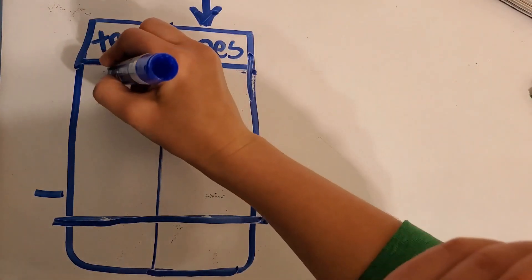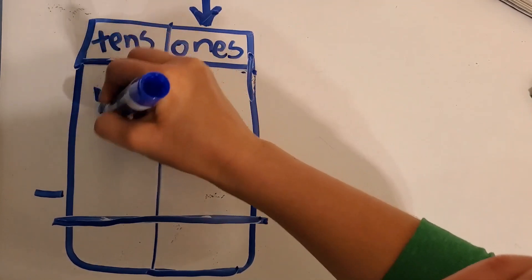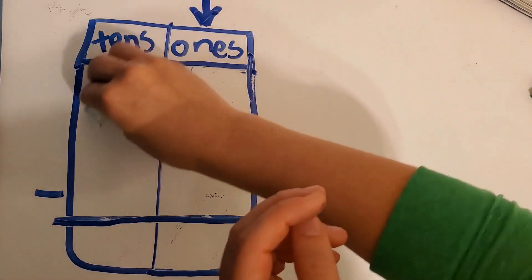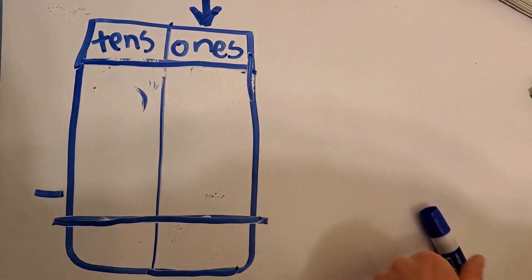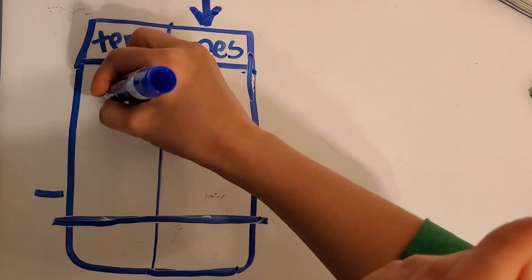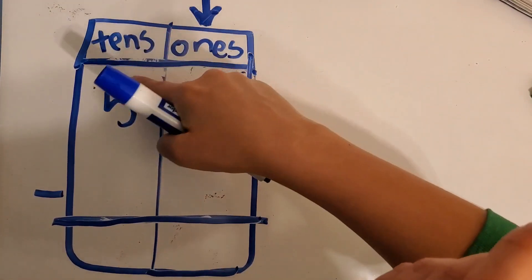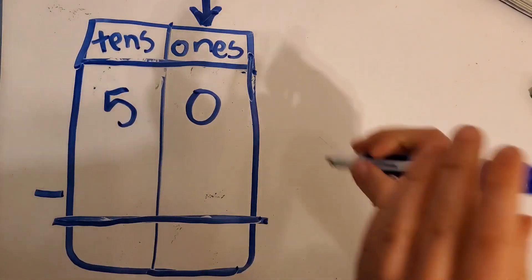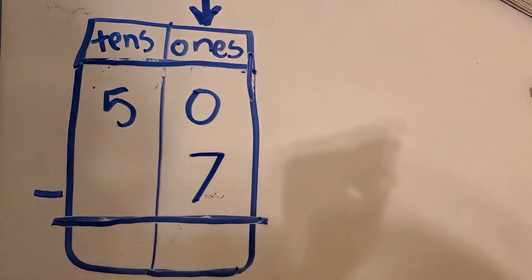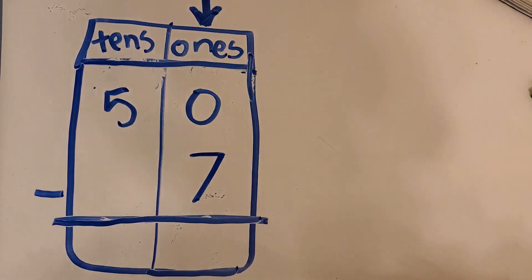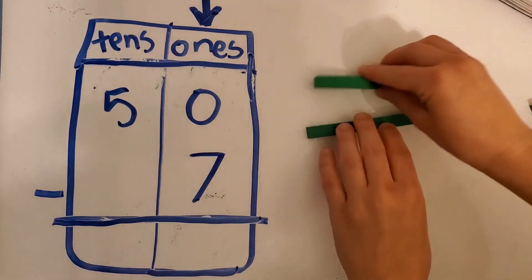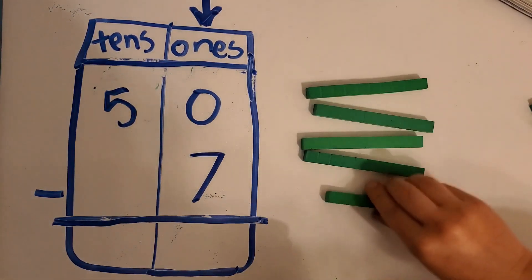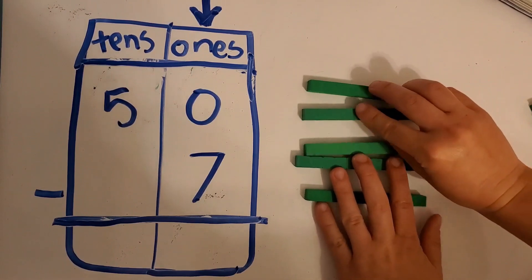We're going to do fifty. So five, zero. Miss zero ones. Oh, boys and girls. Miss Rabbitoh's brain is being crazy today. Then we're going to take away seven ones. My brain's back to working. So let's make fifty. So we need five tens and zero ones.